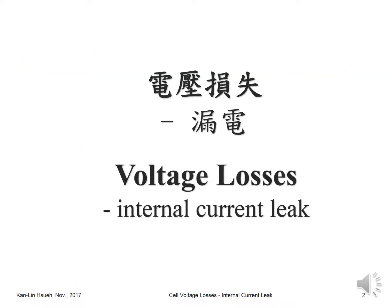The voltage loss due to internal leak occurs because between the anode and the cathode, there may be some kind of shortage and the current directly flows from one electrode to the other electrode rather than going through the external load. This means that energy is consumed by the internal current leak.